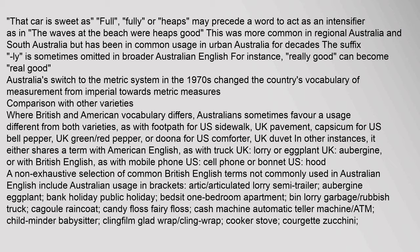Where British and American vocabulary differs, Australians sometimes favour a usage different from both varieties, as with 'footpath' (US: sidewalk, UK: pavement), 'capsicum' (US: bell pepper, UK: green/red pepper), or 'doona' (US: comforter, UK: duvet). In other instances, Australian English either shares a term with American English, as with 'truck' (UK: lorry) or 'eggplant' (UK: aubergine), or with British English, as with 'mobile phone' (US: cell phone) or 'bonnet' (US: hood).